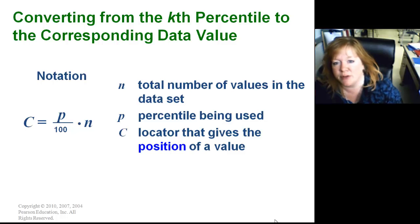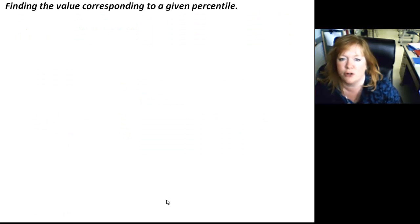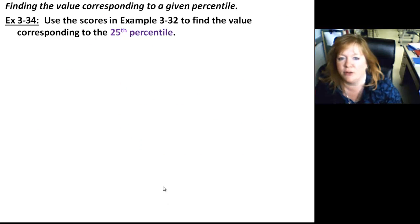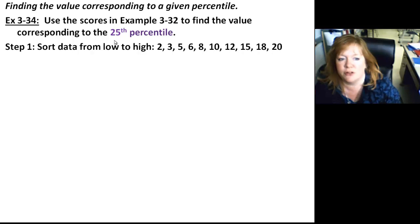Now, if you're trying to go backwards and say, I'm in the 60th percentile, what score would I have to get to be in the 60th percentile? This is this formula. C is going to be a locator that gives a position of value. Now, C is going to either be a whole number or a decimal number, and we're going to have a couple different processes to do. But don't worry, we're going to go through a couple of examples here to show you both case scenarios.